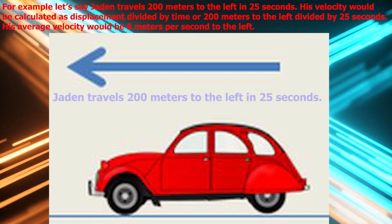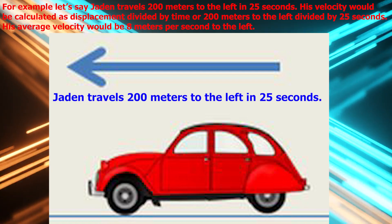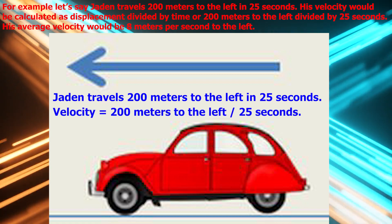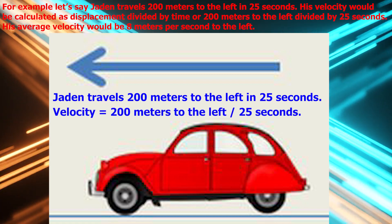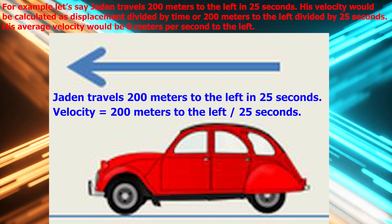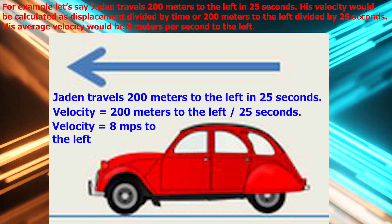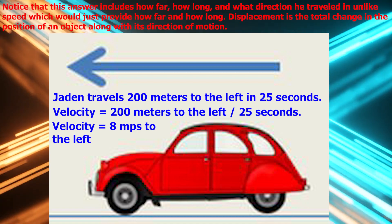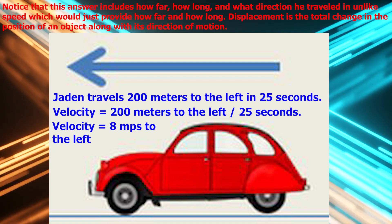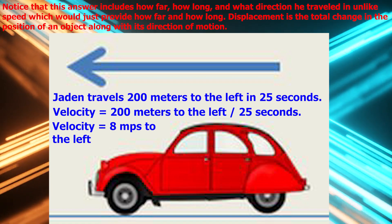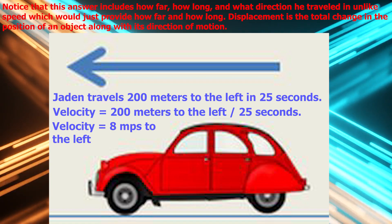For example, let's say Jayden travels 200 meters to the left in 25 seconds. His velocity would be calculated as displacement divided by time or 200 meters to the left divided by 25 seconds. His average velocity would be 8 meters per second to the left. Notice that this answer includes how far, how long, and what direction he traveled in, unlike speed, which would just provide how far and how long.